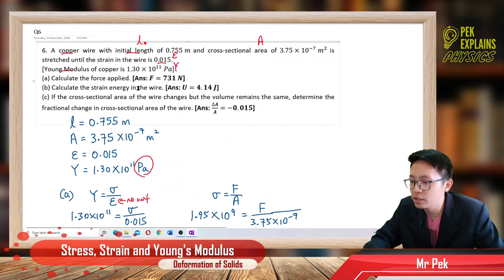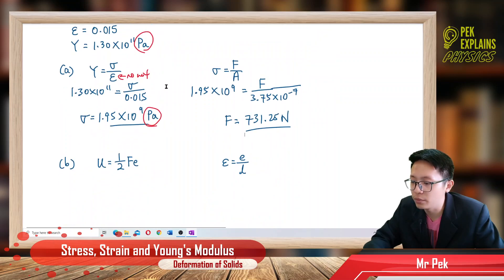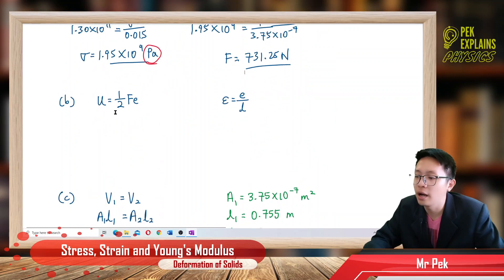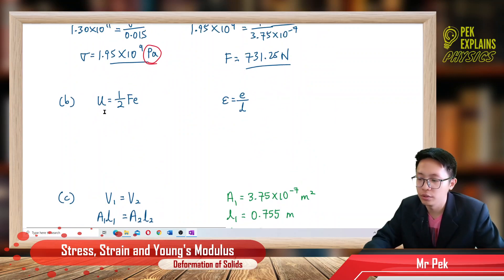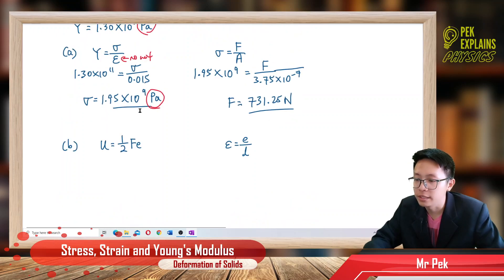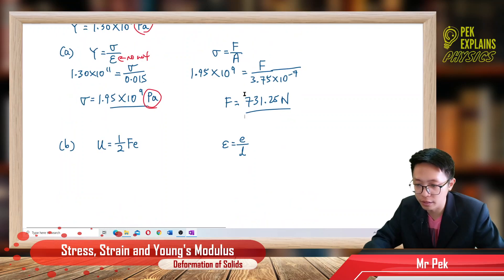Now, what's the strain energy in the wire? The formula for strain energy is U equals half F times e (elongation). I got the force already — 731.25 Newton. But I don't have the elongation yet. What I do have is the strain.